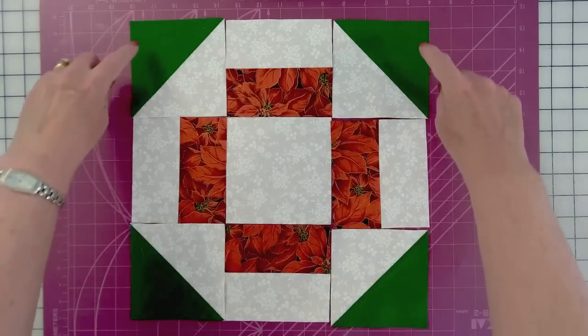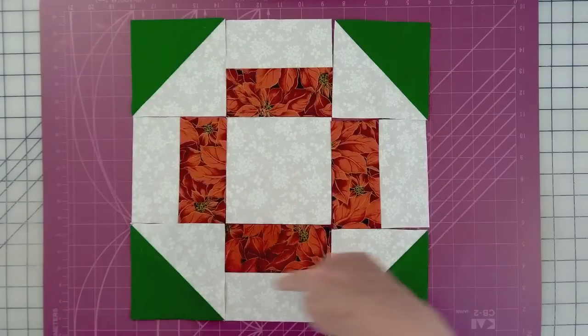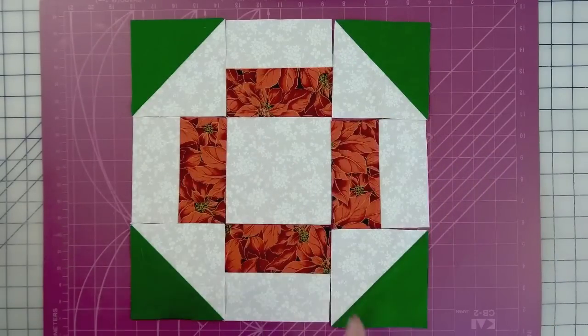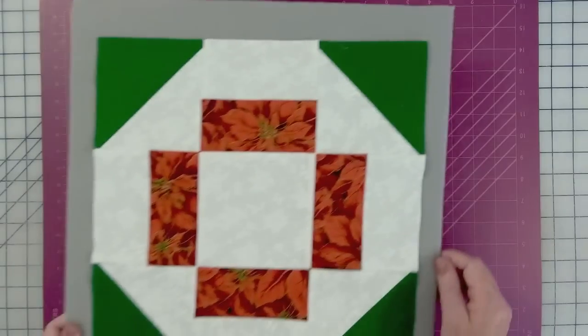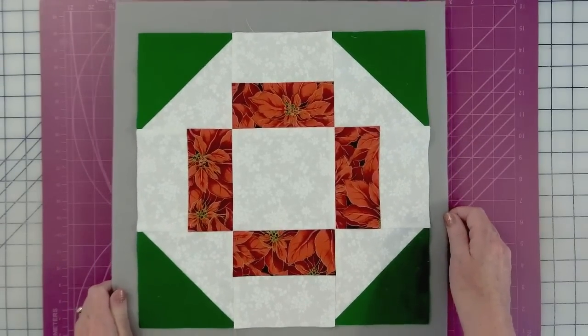So again, this is the negative Grecian square. Notice the green is to the outside corners, and we have a white octagon. And once it's all sewn together, it will look like this.